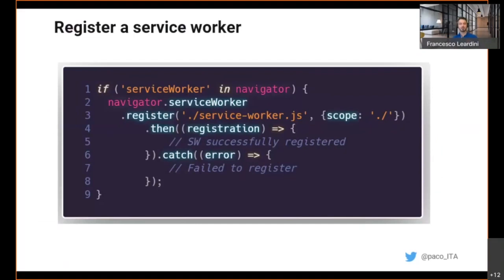When we register a service worker, we need to pay attention to its location — this is always a source of confusion when starting with progressive web apps. Typically, the service worker file is placed at the root of the domain. This allows the service worker's scope to cover the entire origin and allows it to receive fetch events from everything under its domain. The scope parameter is optional; we can use it to specify a subset of our content that we want the service worker to cover. If omitted, the default scope of the service worker will be its own location.